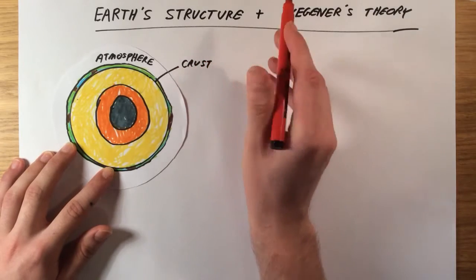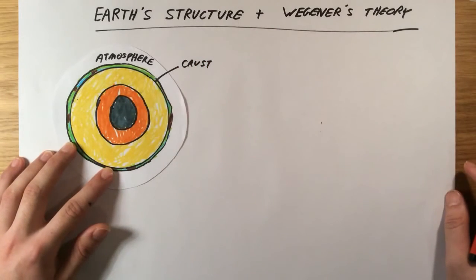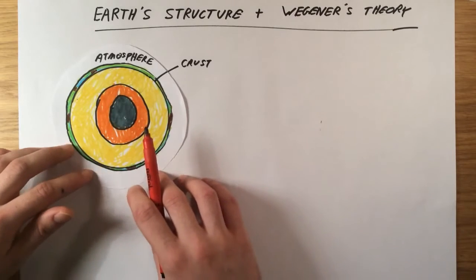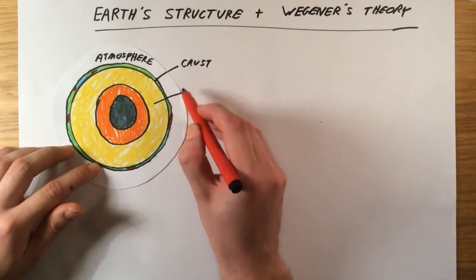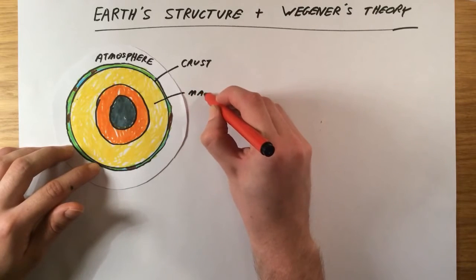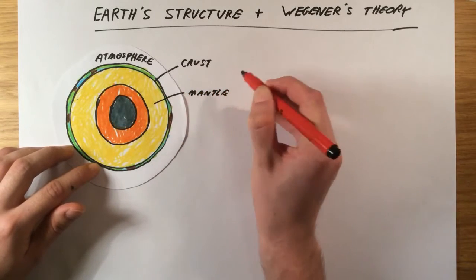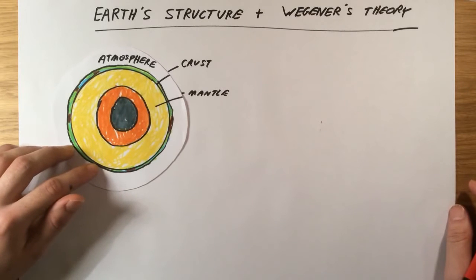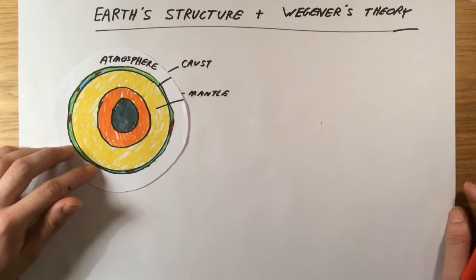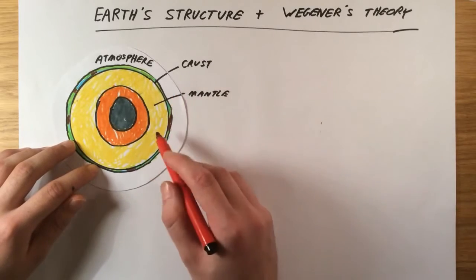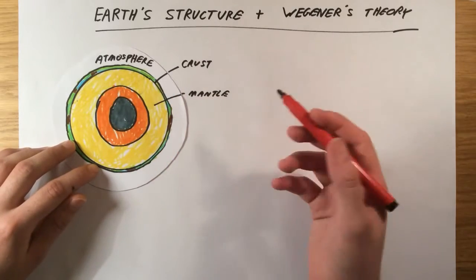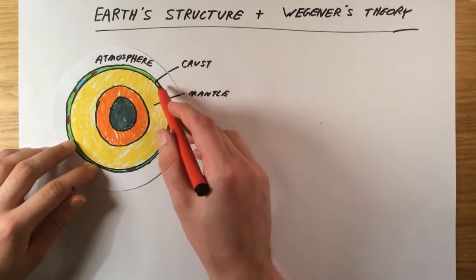This is where all of the materials we use, all of the rocks, metals, fuels, and everything else are found. The next layer is called the mantle, and the mantle is a very viscous liquid. People think of it as a solid, but it can kind of flow somewhere in between the two. It's very hot and it actually allows parts of the crust to move.